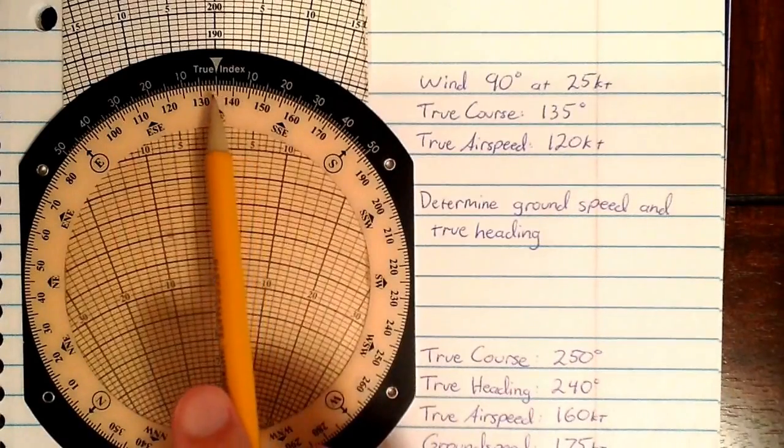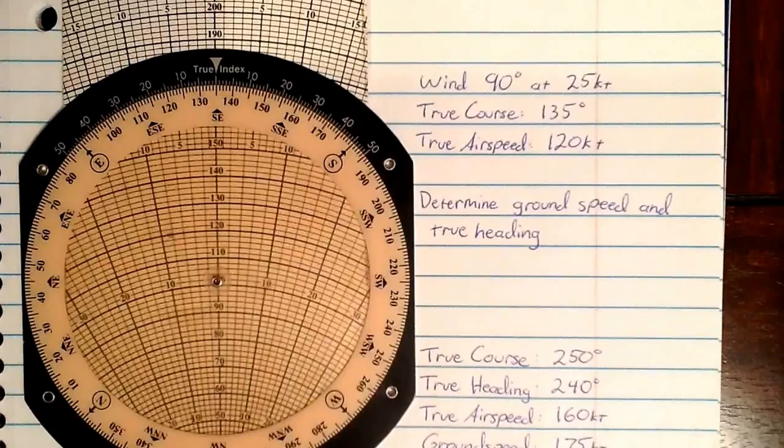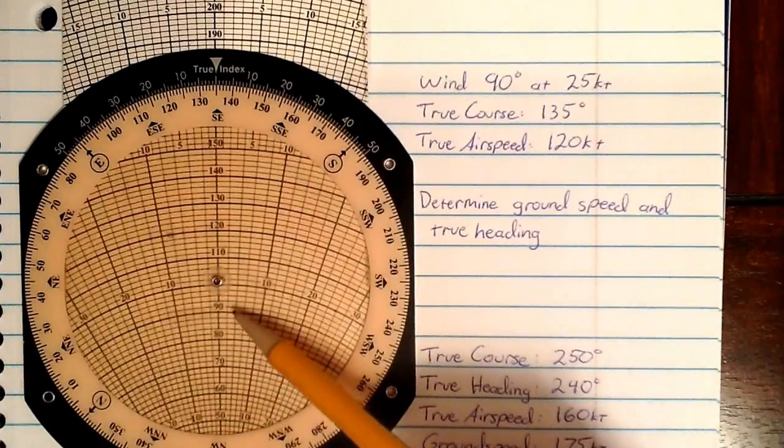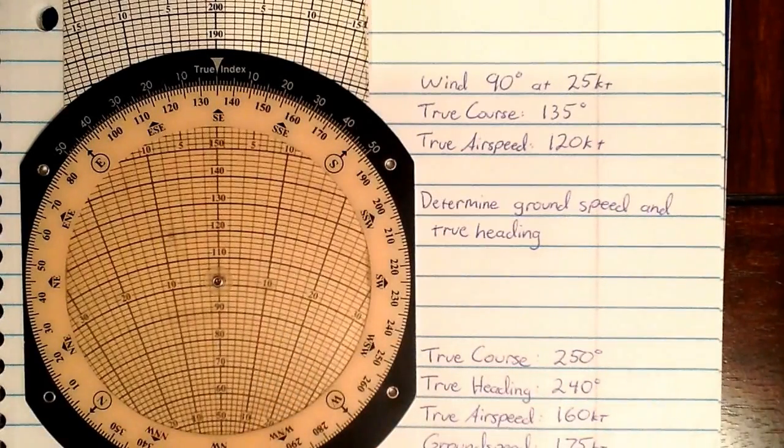It's also telling us our ground speed, which in this case is just slightly over 100 or approximately 101 knots.